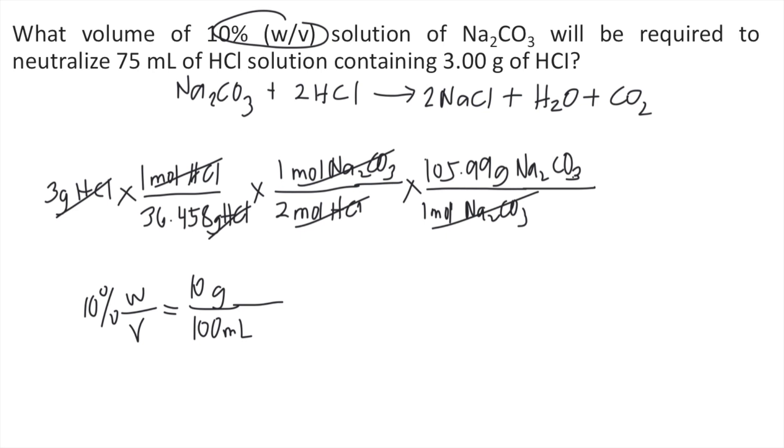So I repeat, 10% weight per volume means that for every 100 ml of solution, it contains 10 grams of Na2CO3. So you can put this into your solution. So 100 ml of the solution contains 10 grams of Na2CO3.